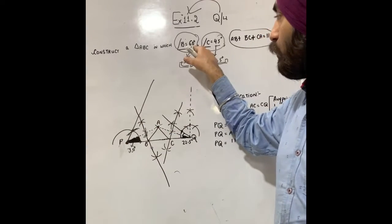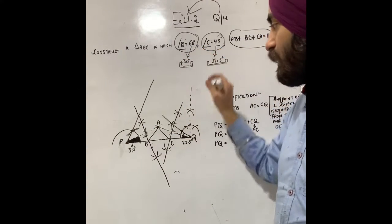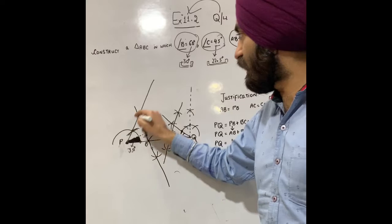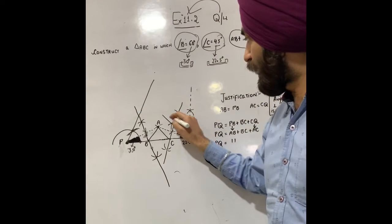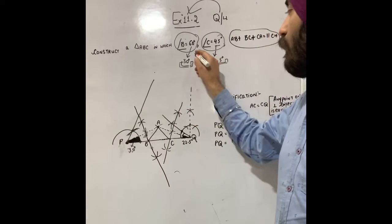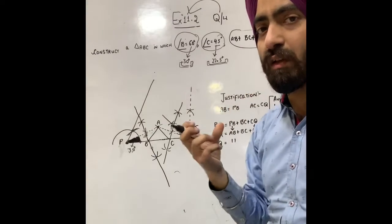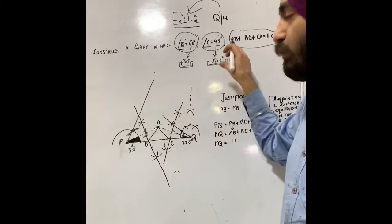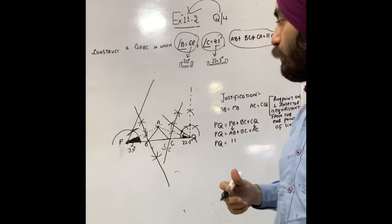First, we will make 60 degrees at P and 45 degrees at Q. But the main thing I have to tell you is that we need to construct angle bisectors, which will be 30 degrees and 22.5 degrees. So I will make 60 degrees at P and then construct its bisector to get 30 degrees.